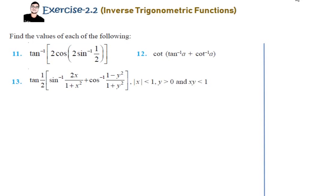Hello friends, welcome to my channel Math Alcoholic. In this video I'll be discussing questions 11, 12, and 13 of exercise 2.2 from the chapter on inverse trigonometric functions. Starting from question 11, we need to find the value of the given expression: tan inverse of 2 cos of 2 sin inverse of half. This is very easy.